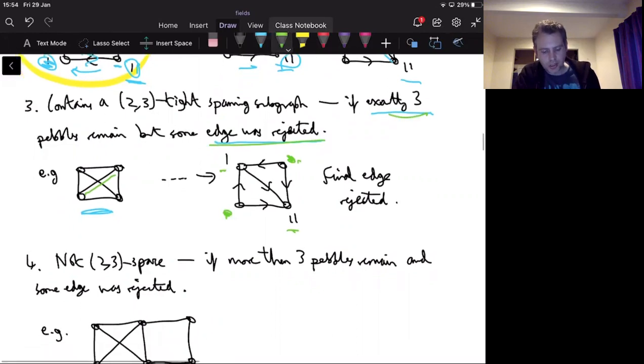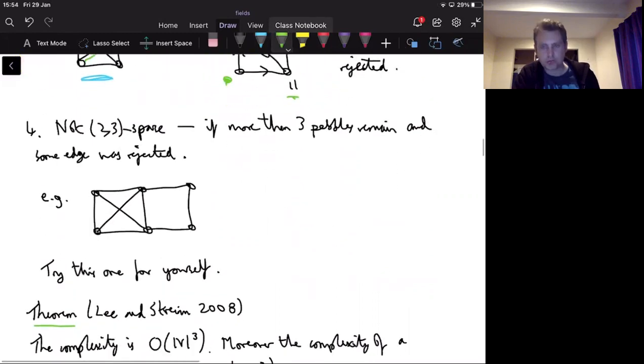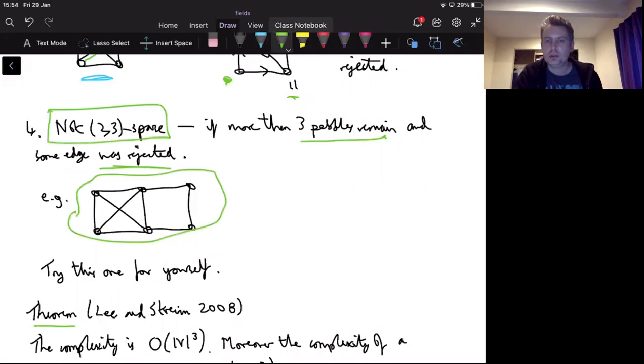So then there's the last case, which would be some edge was rejected and more than three pebbles remain. So this one's a bit more complicated and I'm already over when I wanted to stop. So if more than three pebbles remain and some edge was rejected, that's the case where you're not sparse. So it would be something like this was happening, but I'll let you do the examples for yourself.